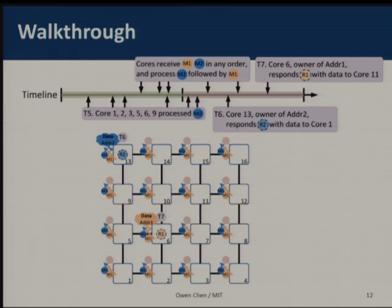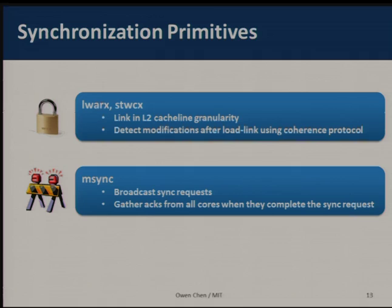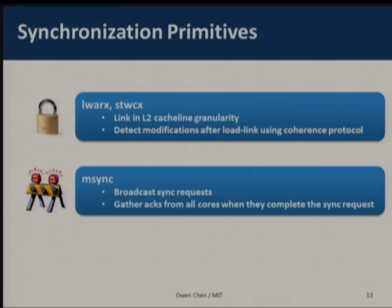At times T6 and T7, core 6 and core 13 send back data responses and complete the transactions. To support parallel programming and correct program functionality, we also implement support for synchronization primitives, including load-link and store-conditional instructions. The linked address is tracked at L2 cache line granularity, and we leverage the coherence protocol to detect modifications to linked addresses. We also implement support for sync-related instructions, using the ordered broadcast mechanism to ensure memory operations are seen by all other cores before sync completes.